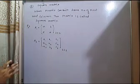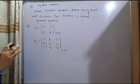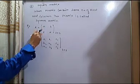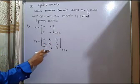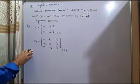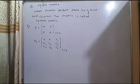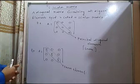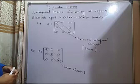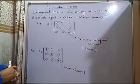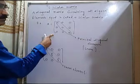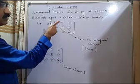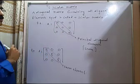The third type is the square matrix. In a square matrix, the number of rows and number of columns must be the same. For example, 2 rows and 2 columns gives order 2 by 2; 3 rows and 3 columns gives order 3 by 3. Such a matrix is called a square matrix. Now the scalar matrix — it is a type of diagonal matrix. A diagonal matrix in which all diagonal elements are equal is called a scalar matrix. When the diagonal elements are the same and all other elements are 0, that is a scalar matrix.